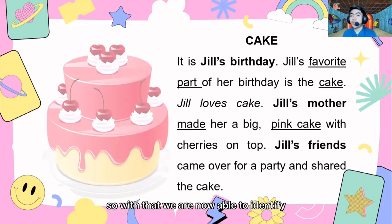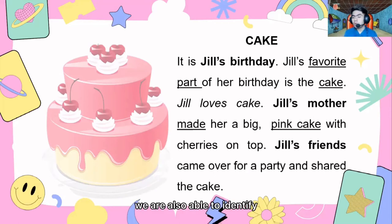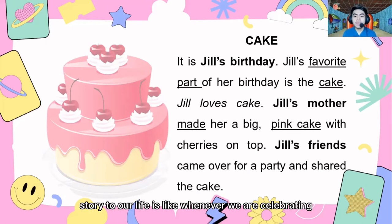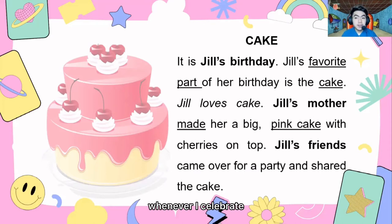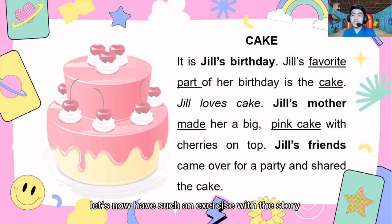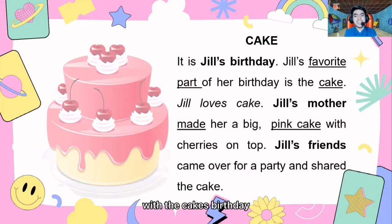With that, we are now able to identify the main characters of the story. We are also able to identify the context, which is Jill's birthday. And relating this story to our life — whenever I am celebrating, I also want cake at my birthday party. So now let's have an exercise to see if you are able to comprehend the story about Jill's birthday. I prepared three example questions on the story: What is the name of the celebrant? Who made the cake? And to whom was the cake shared? In every question, I will only give five seconds to answer. If you need more time, just pause the video, then play it when you have the answer.